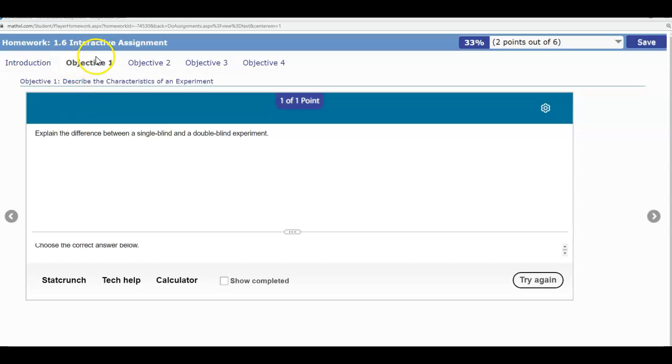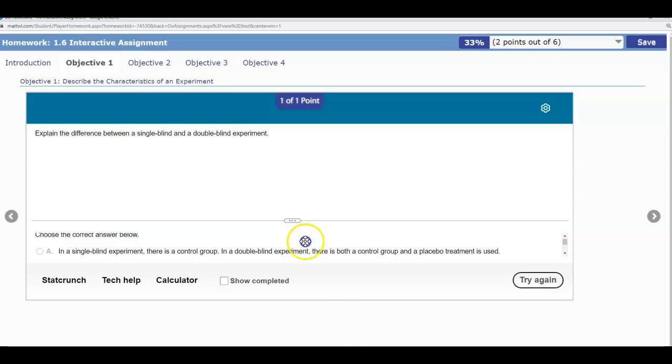Section 1.6 Interactive Assignment Objective 1. Explain the difference between a single blind and a double blind experiment. We're going to answer the following below.